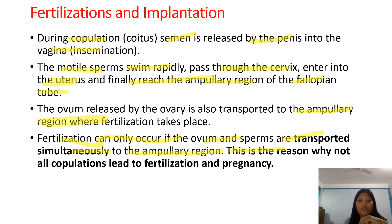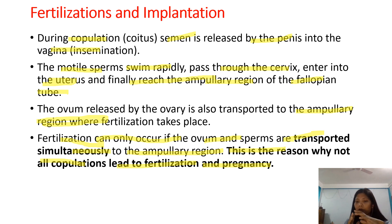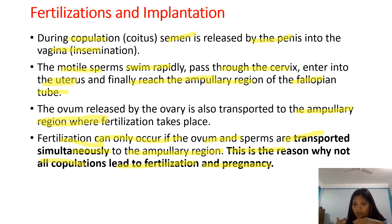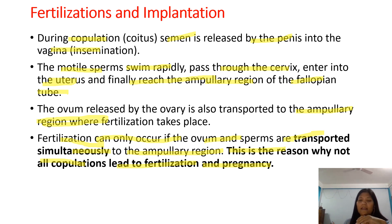This is the reason why not all copulation leads to fertilization and pregnancy. Some women cannot conceive. This is because the ovum and sperm must arrive simultaneously at the ampullary region for fertilization to occur.